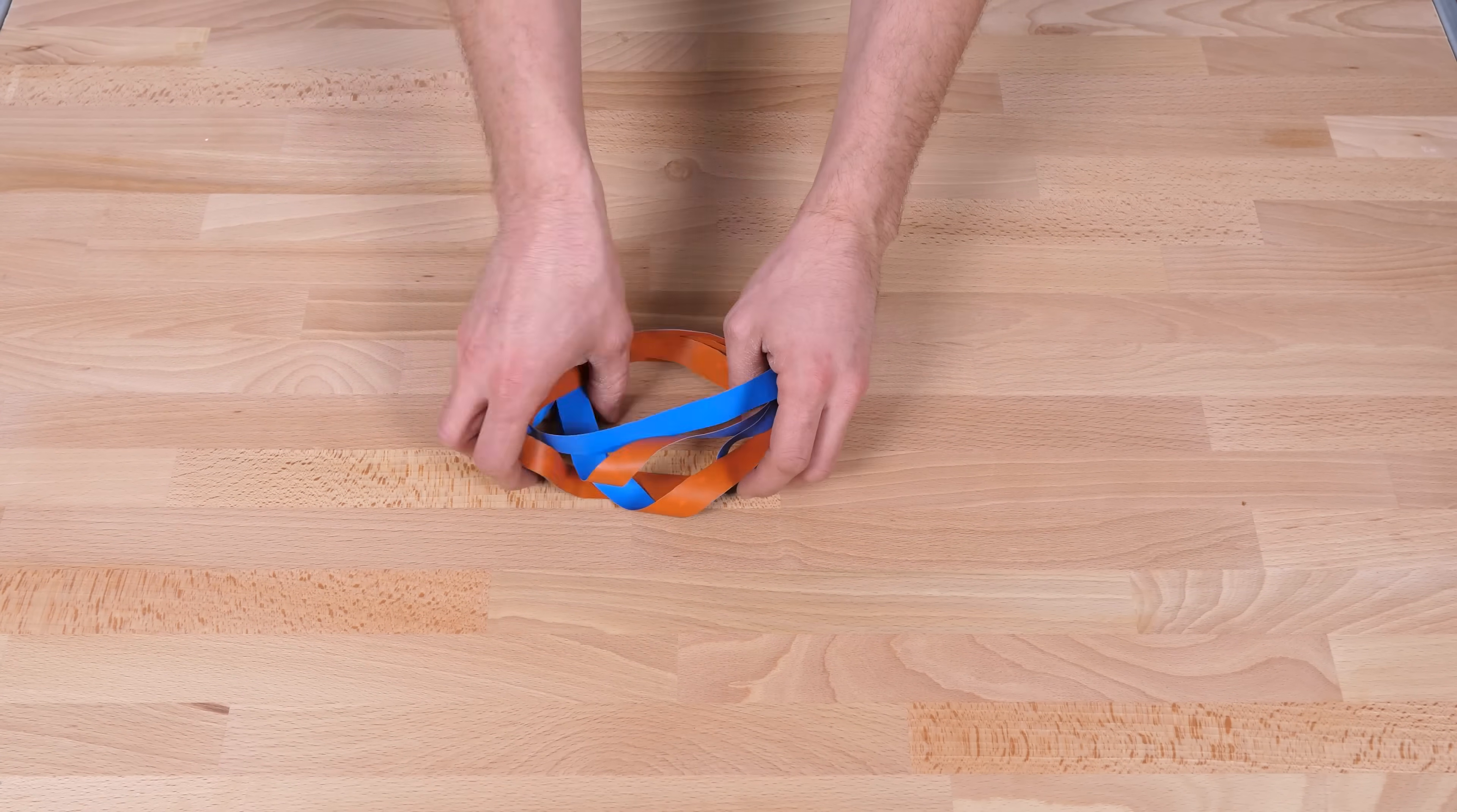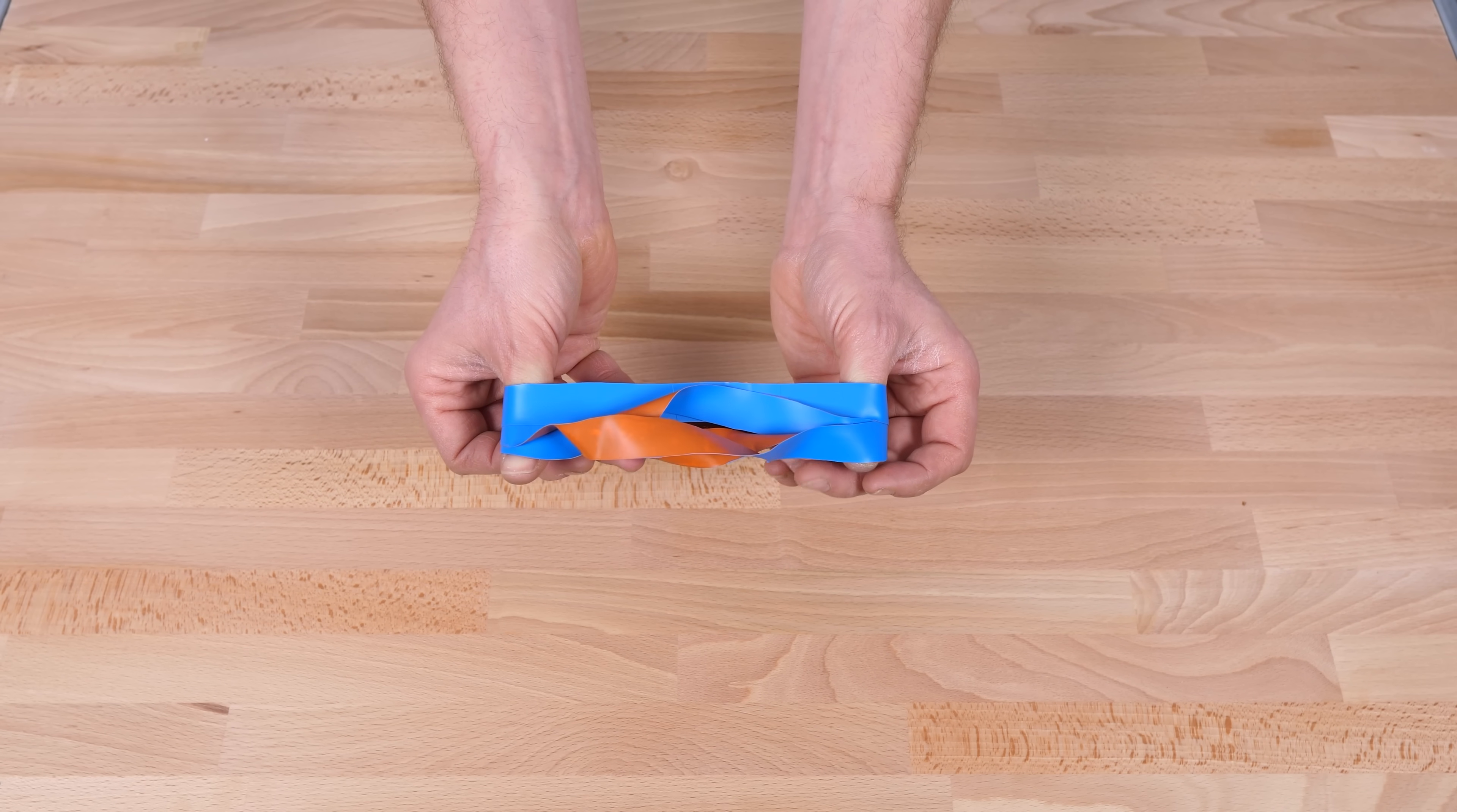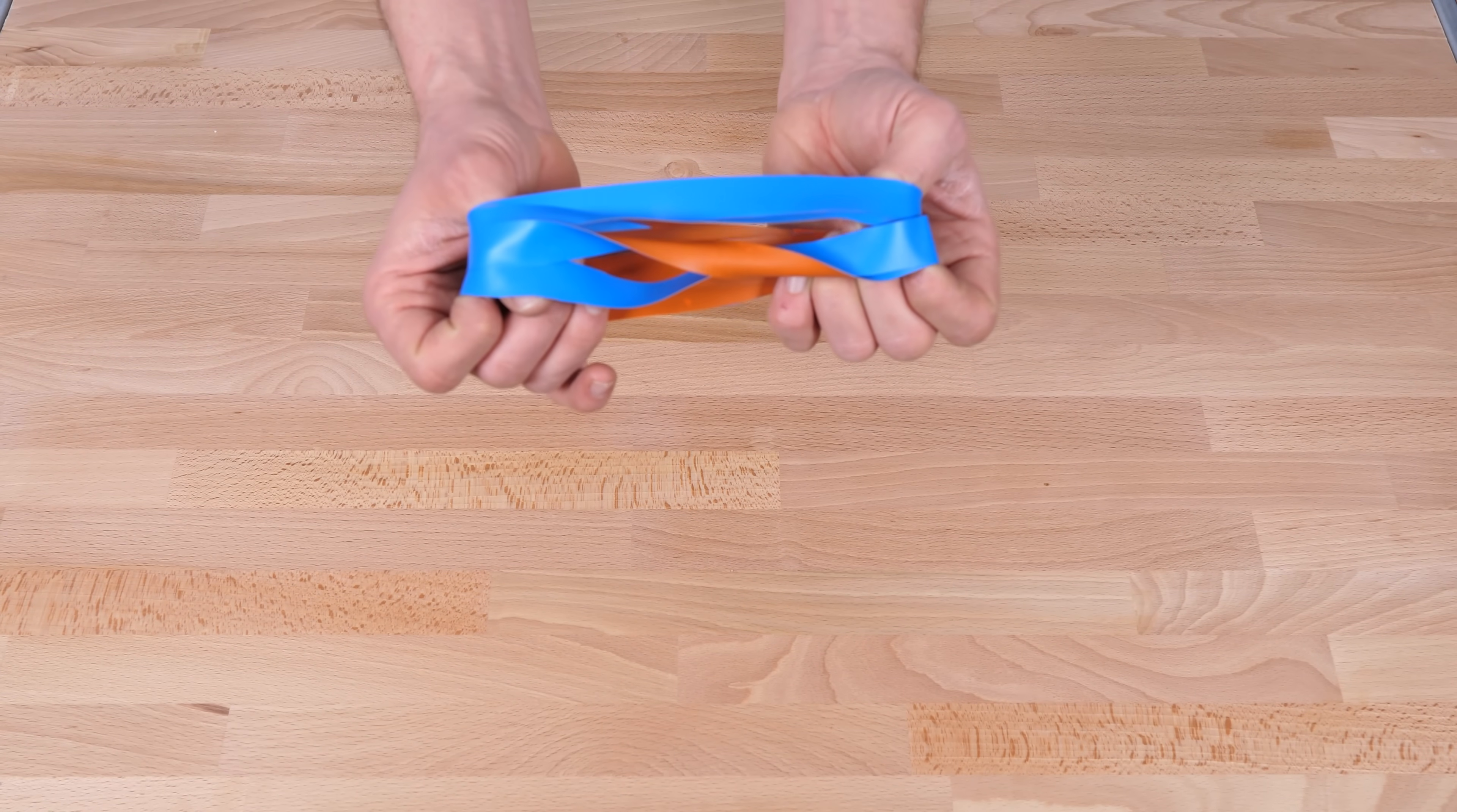And depending on which way you go, they will either add to the twist that's already in it, so you end up with three twists in total, or they'll subtract from it. Subtracting two twists from one leaves you with minus one twist.